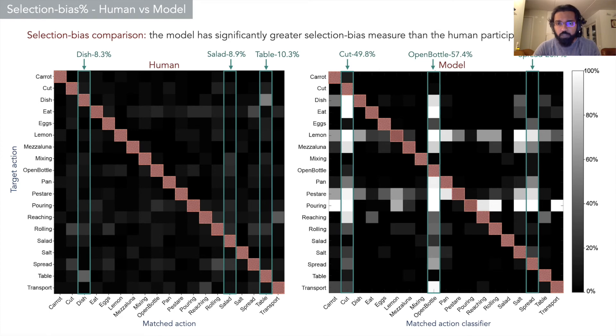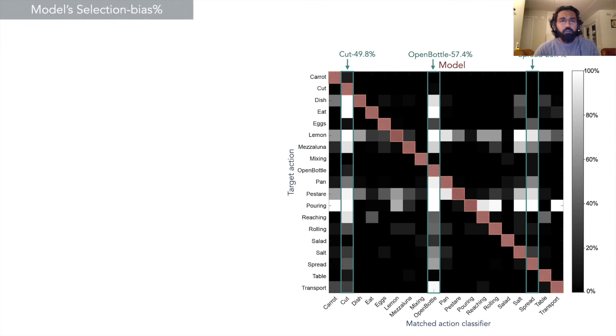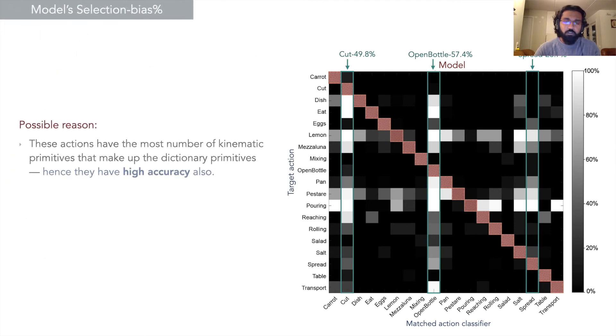The possible reason for it is that these selected actions have the most number of kinematic primitives that make up the dictionary, and hence they have high accuracy also, so they have a good representation of themselves.